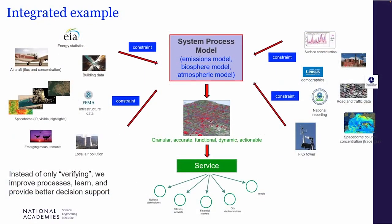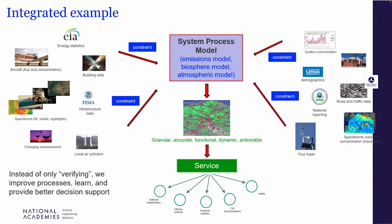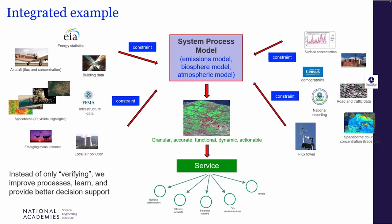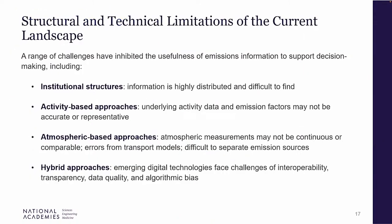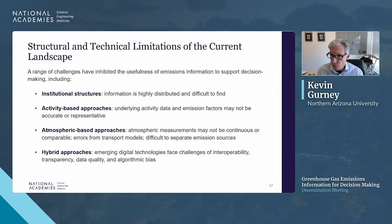In the hybrid approach, all observations surround a central process model, providing constraints and adjusting parameters within that larger model. The advantage is you get more information and more learning about the processes, yielding both a better estimate and one that includes a lot more information that stakeholders and decision makers are increasingly interested in.